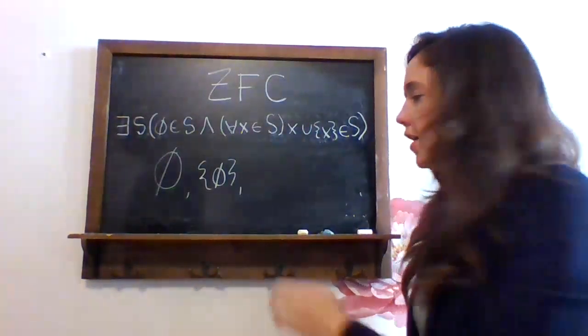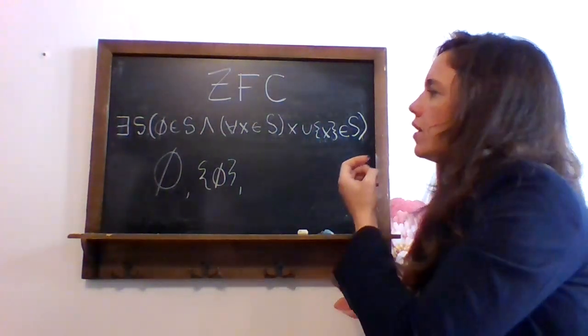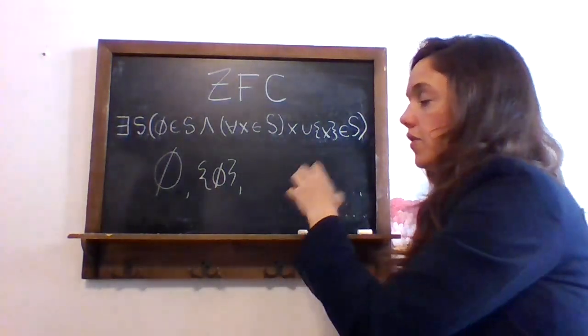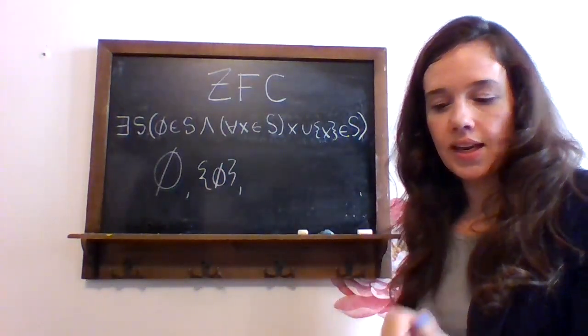So we've got two elements of S already. Let's do one more. I can use this to generate another element of S. Another element of S contains all the elements of this set, so it has the empty set and the set itself.